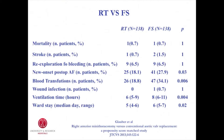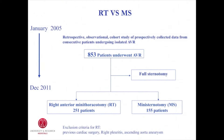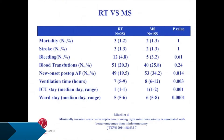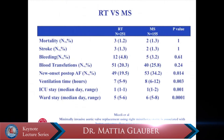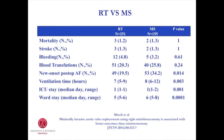Moreover, patients in the right thoracotomy group had shorter ventilation time (6 hours versus 8 hours) and postoperative length of stay (5 days versus 6 days). We also compared patients undergoing right thoracotomy versus mini sternotomy. Among 853 patients from January 2005 to December 2011, we compared 251 patients undergoing right thoracotomy versus 155 patients undergoing mini sternotomy. Patients receiving right thoracotomy had better outcomes, with lower postoperative atrial fibrillation (19% versus 34%), shorter ventilation time (7 hours versus 8 hours), and shorter hospital stay (5 days versus 6 days).